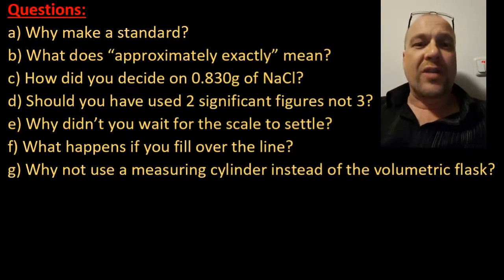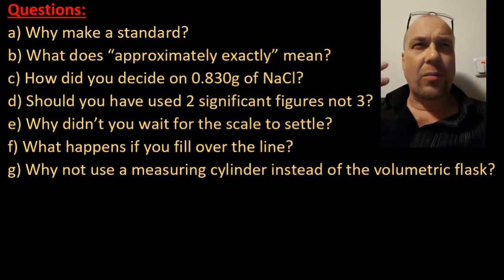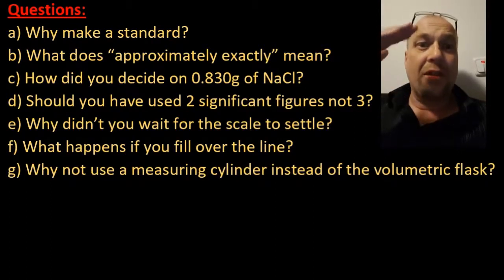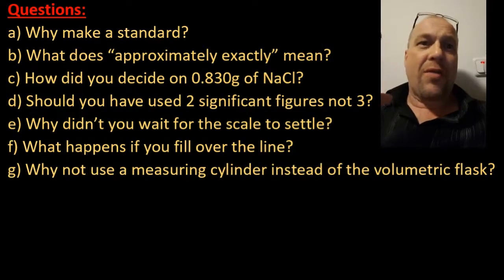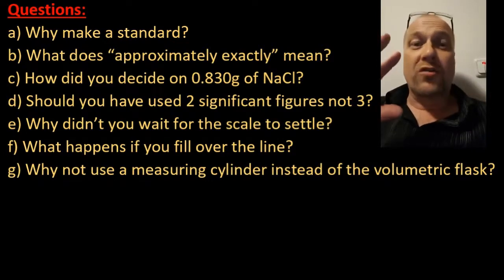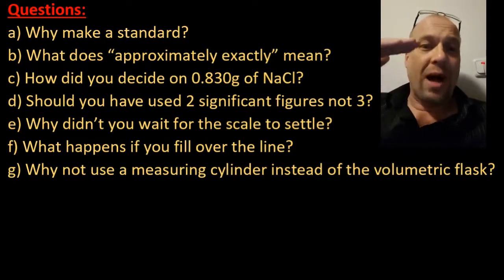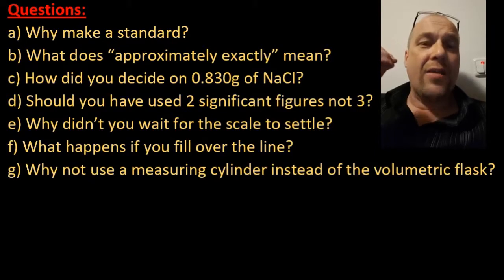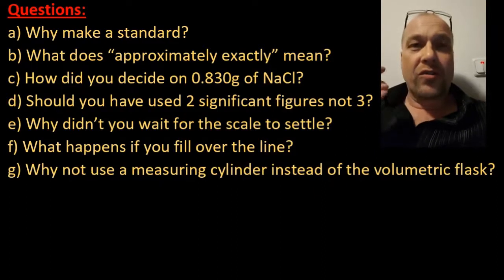That's why I didn't measure out exactly the amount that the stoichiometry would suggest. How did I decide on 0.830 grams of sodium chloride? The balance was going up and down. I tried to be still but air currents were moving the balance. Also, chemicals like sodium chloride or sodium hydroxide absorb water from the air and get heavier and heavier — the longer you wait, the higher the mass will crawl up. So 0.830 looked like about the average. Shouldn't I have used two significant figures instead of three? Yes — the third significant figure on that balance was all over the place.